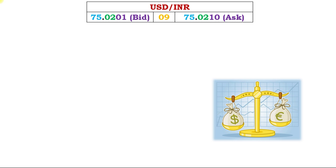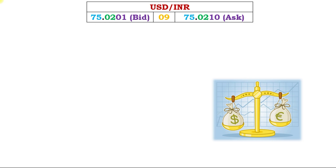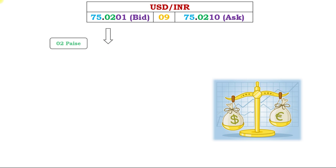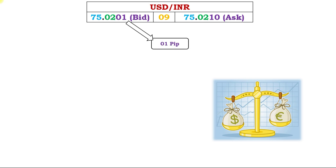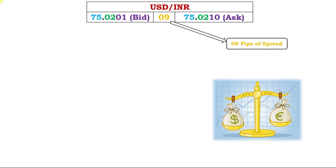Let's understand the position of these numbers in the given code. In the bid rate, 75 means Rs. 75. Out of 4 decimals, the first two decimals represent paise (or cents if it's dollars), so here it is 2 paise. The last two decimals are called pips, so here it is 1 pip. This is how we read the currency code. The 9 pip difference between the bank buying rate and selling rate is called the spread or bank's profit.